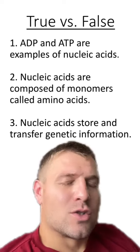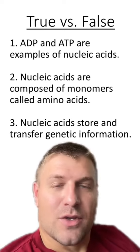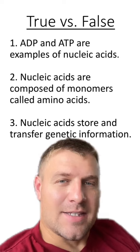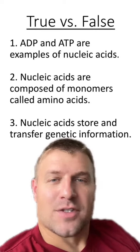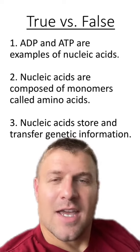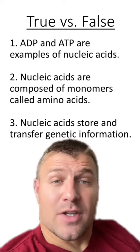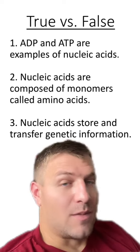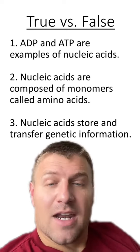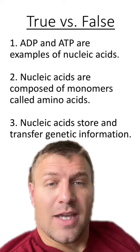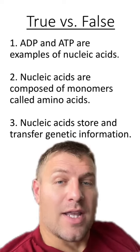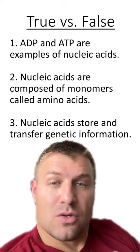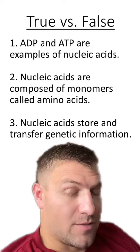Now let's do some true and false statements about nucleic acids. Number one says ADP and ATP are examples of nucleic acids. Number two says nucleic acids are composed of monomers called amino acids. Number three says nucleic acids store and transfer genetic information. Which of these are true and which are false?